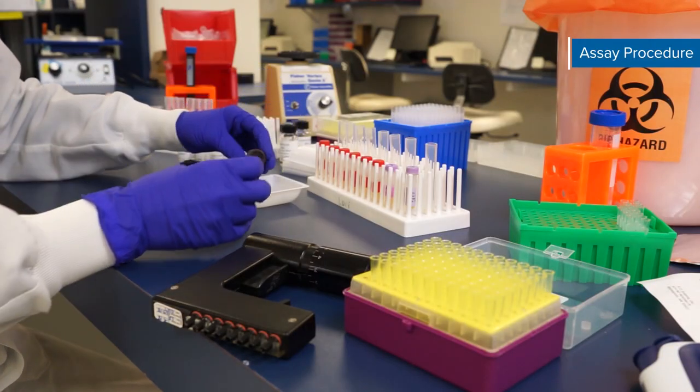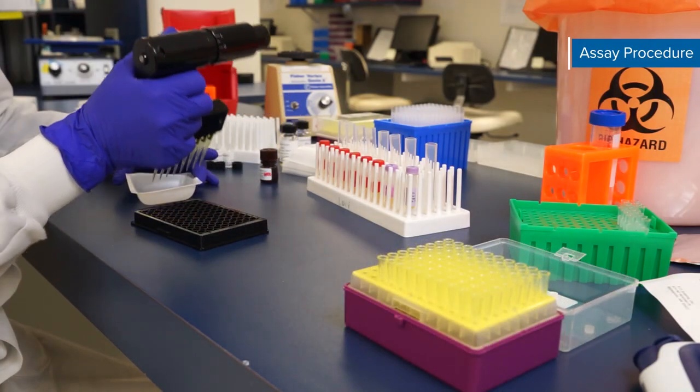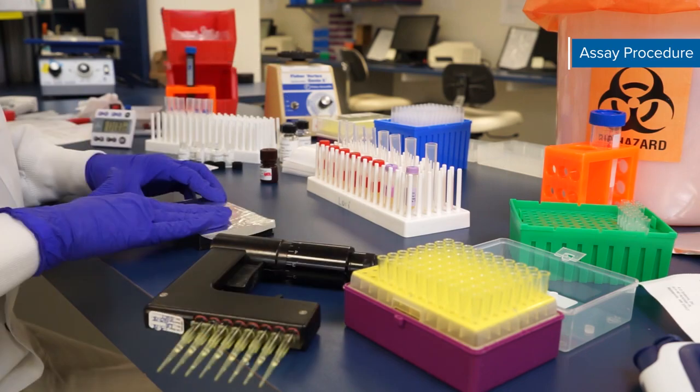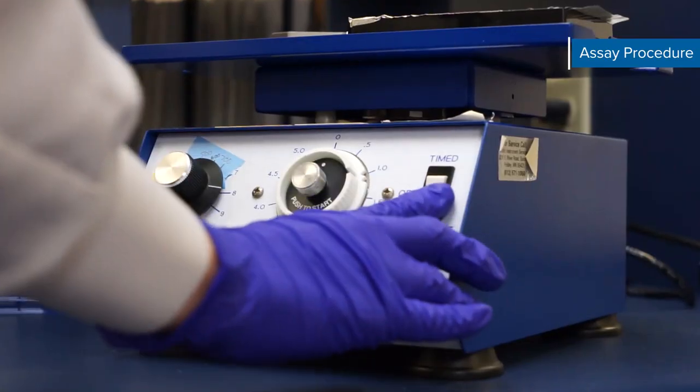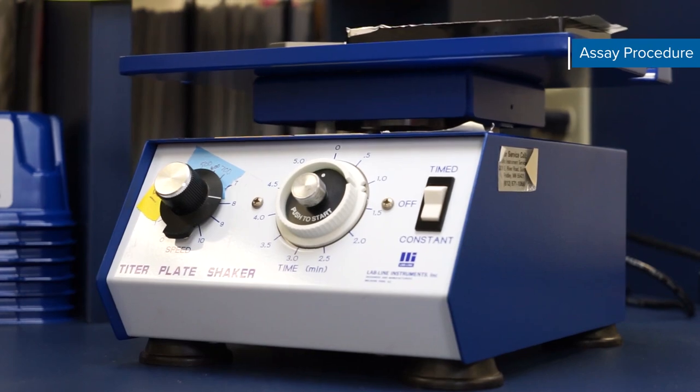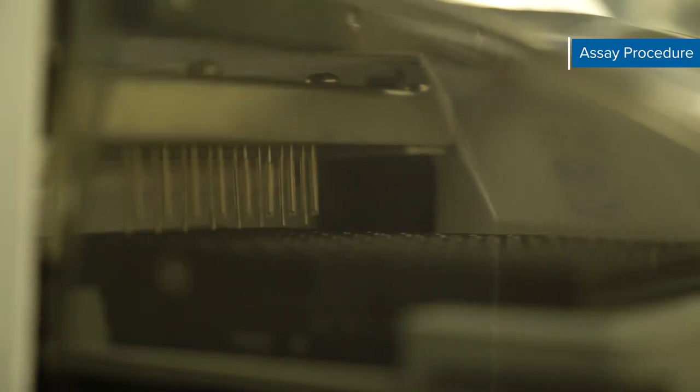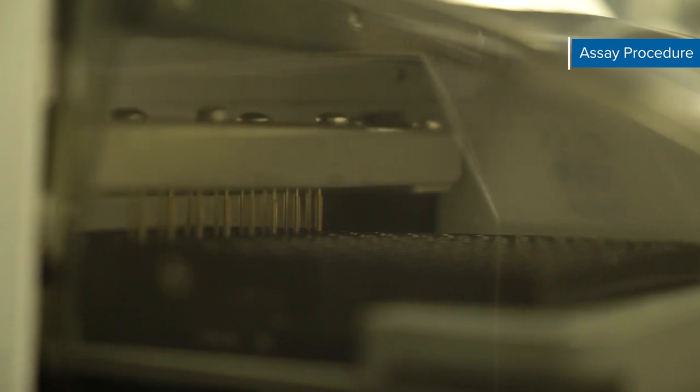Next add 50 microliters of diluted biotin antibody cocktail to each well. Securely cover with a foil plate sealer and incubate for one hour at room temperature on the shaker. After incubating for one hour repeat the wash step for a total of three washes. Again you may use an auto washer if you have one available.